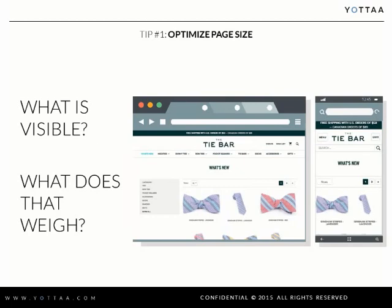Here we have an example of one of our catalog pages. It's an entire page of images. We're scaling those images based on the device size, so we're actually serving a different size image based on the device you're looking at — which changes the page weight. We're also making sure that images and all the assets on that page are being loaded from the top down.